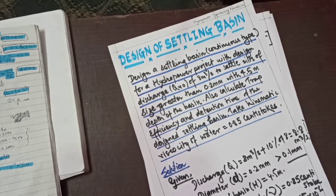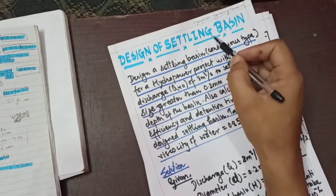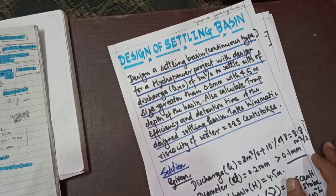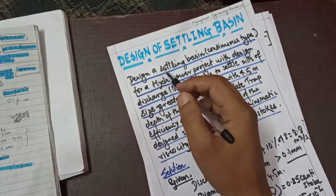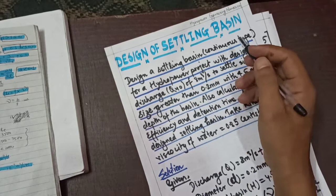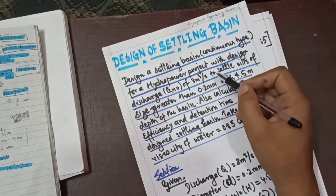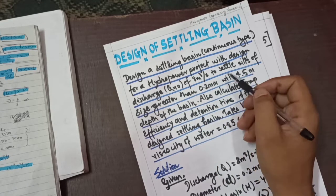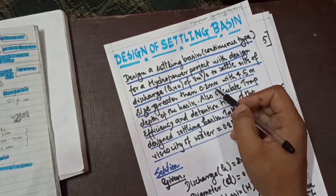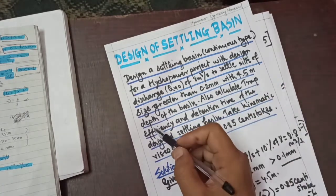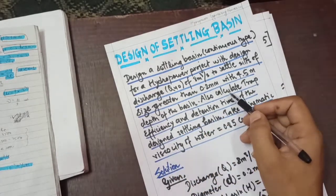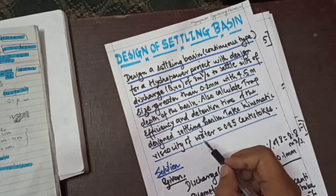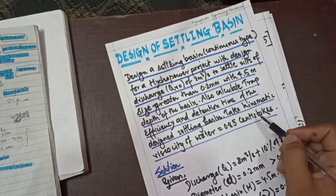Namaste. Today we are going to solve a numerical problem. Design a settling machine — continuous type for a hydropower project with design discharge Q40 of 8 meter cube per second to settle particles of size greater than 0.2 mm with 4.5 meter depth of the basin. Also calculate trap efficiency and detention time of the designed settling basin. Take kinematic viscosity of water equals to 0.85 centi-stokes.